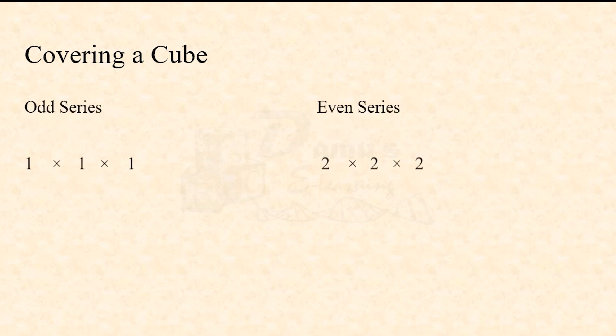Therefore a 1×1×1 cube is completely inside a 3×3×3 cube. To cover a 3×3×3 cube you need a 5×5×5 cube. Similarly, a 2×2×2 cube is completely inside a 4×4×4 cube, and a 4×4×4 cube, etc.